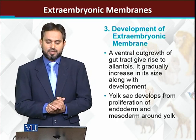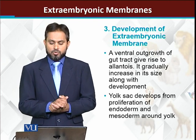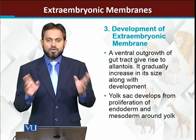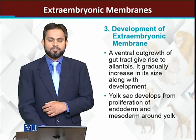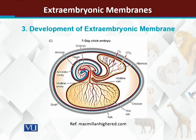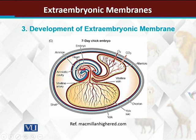The yolk sac is also synthesized by the endoderm and it covers the yolk and is responsible for delivering food to the embryo. If we look at the diagram, you can see that in the center is the embryo. Outside the embryo there are different membranes. The first membrane - which you can see in blue and red color - is actually the amnion, and the white color represents the amniotic fluid.